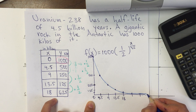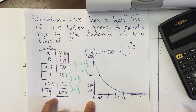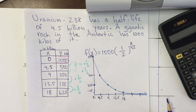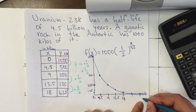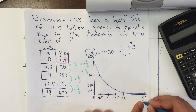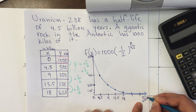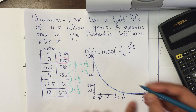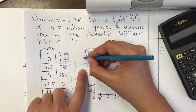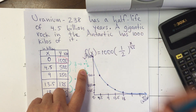I'll sketch the curve right here. Remember, theoretically this never reaches zero, although atoms do disappear — so it converges toward zero. The x-axis represents years in billions and the y-axis represents the kilos left after a certain period.